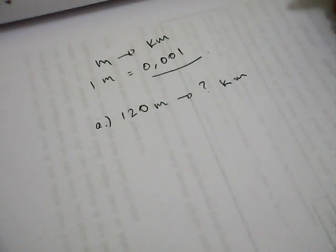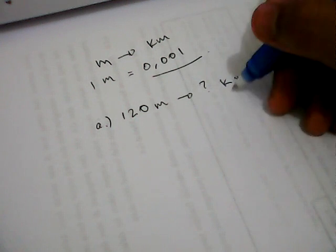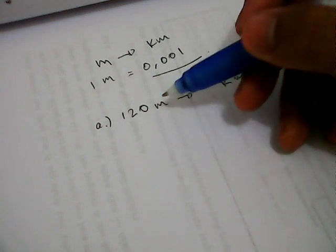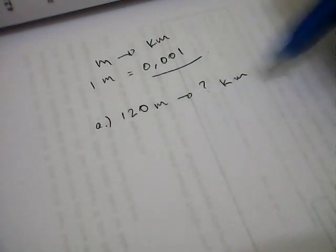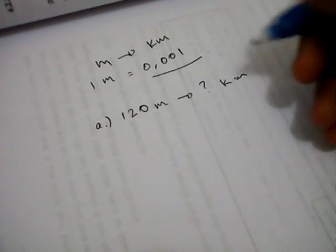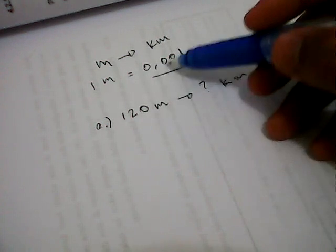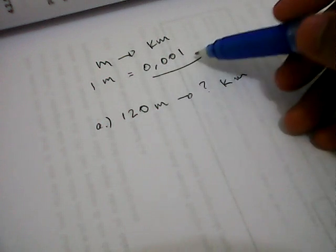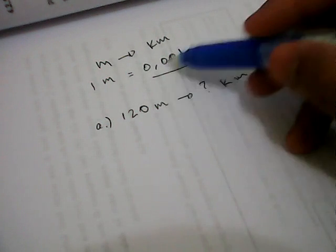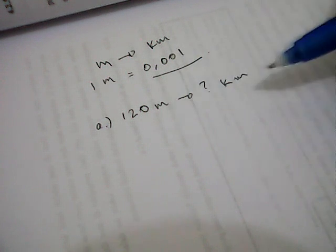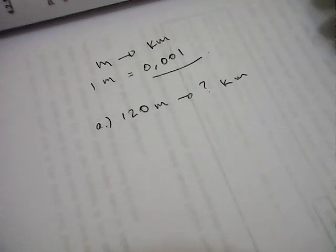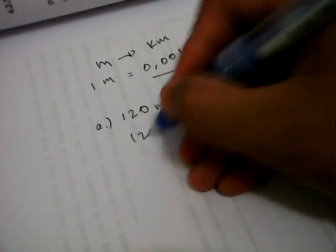How long is this distance? 120 meters equals what in kilometers? Just like we talked about, 1 meter equals 0.001 kilometers. Now we just need to write it down.